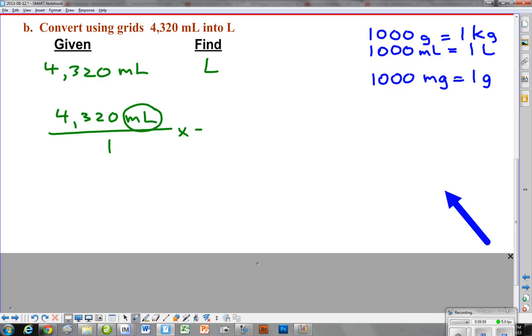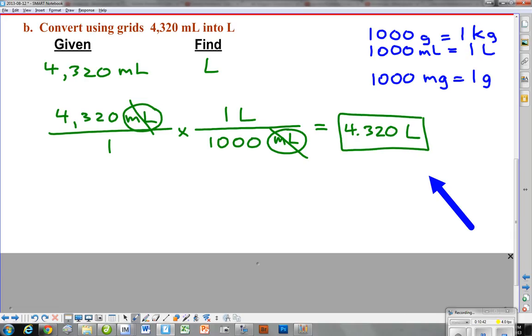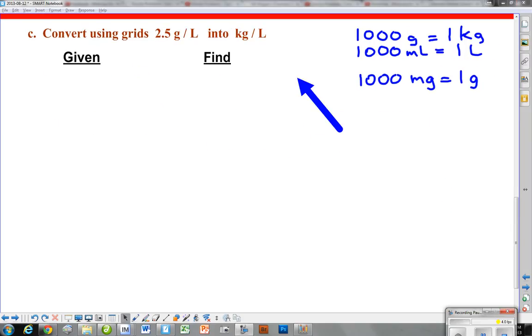The number next to mills is 1,000, and so that's going to go on the bottom because that's the number next to mill in the equality, and then the other side of the equality goes on top. That gives us the only thing left as liters, and then all we have to do is pop our calculator, or you should know that this is going to be 4.320, and that's liters. That's our answer to that guy. Let's move on.